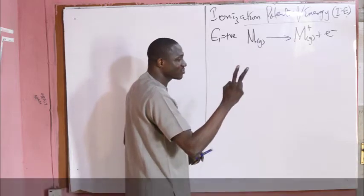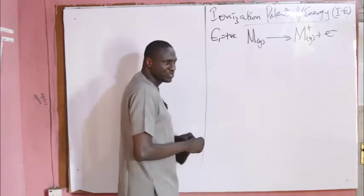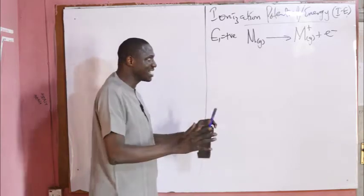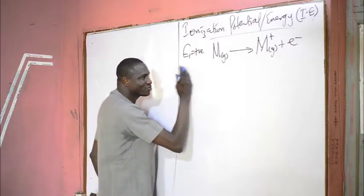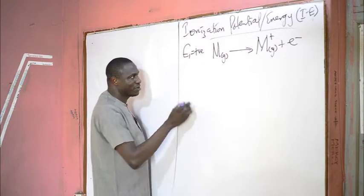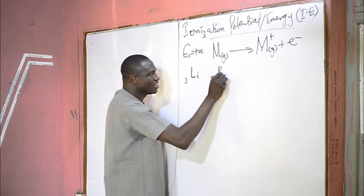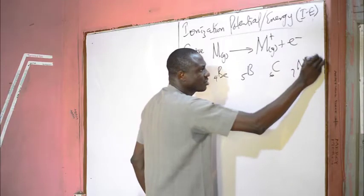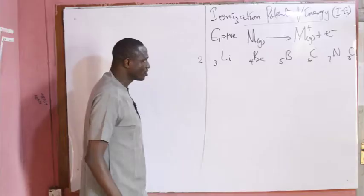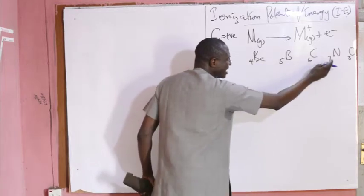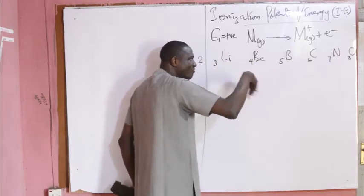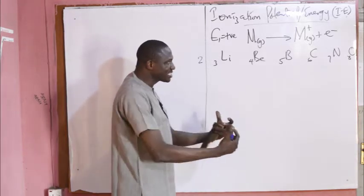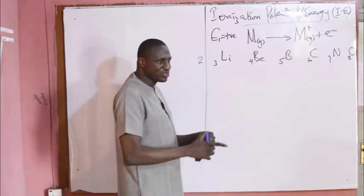Why? Because of two factors. One, there is an increase in nuclear charge across the period, as well as an increase in atomic number, thereby reducing the size of the atom. As you go from left to right across the period, the atomic number increases: lithium atomic number 3, beryllium 4, boron 5, carbon 6, nitrogen 7, oxygen 8, and so on. So there is an increase in the number of positive charges in the nucleus, leading to an increase in the electrostatic force of attraction between the positively charged nucleus and the electrons surrounding it.